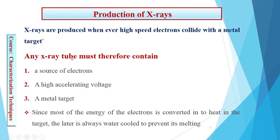Any X-ray tube must contain the following three important components. One is the source of electrons — the source of electrons is the filament. A high accelerating voltage is applied across this filament, which produces the electrons by thermionic emission.